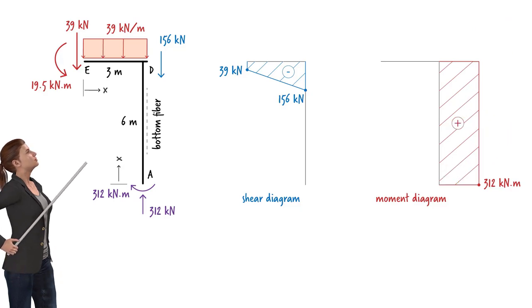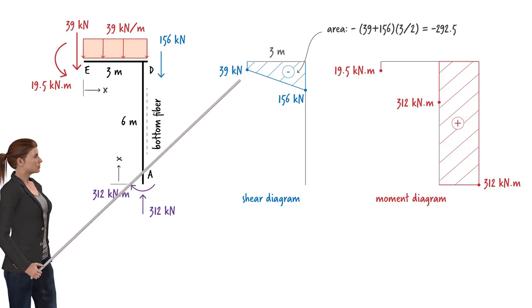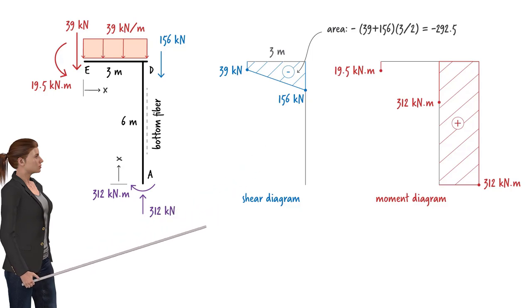For the beam segment, we have a negative moment of 19.5 kNm at end E. Since the area under the shear diagram is 292.5, the value of bending moment at the right end of the beam equals 292.5 plus 19.5, or 312 kNm. Since the shear diagram is linear, the moment diagram is going to represent a quadratic equation. Furthermore, since shear decreases in value from left to right, the moment diagram must have a decreasing slope from left to right, like this.